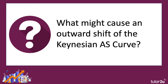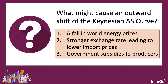What might cause an outward shift of the Keynesian aggregate supply curve? The aggregate supply curve will shift outwards if there's a fall in the unit cost of production. It could be, for example, that world energy prices — the price of crude oil and gas — have fallen. It could be perhaps a strong exchange rate leading to lower import prices. When the exchange rate is strong, the price of goods and services we import tends to go down. Or on the fiscal side, the government increasing subsidies to cut the costs of producers in farming, construction, or energy.